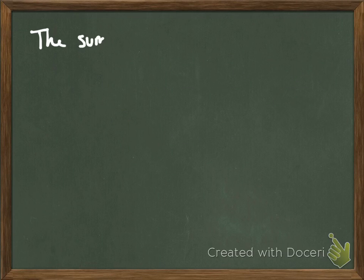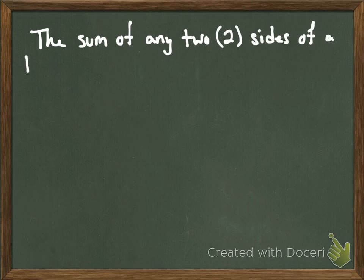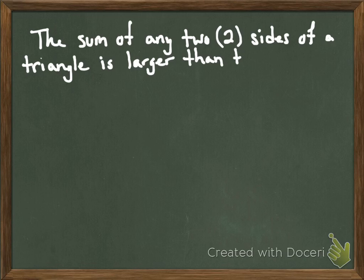Alright guys, so let's get right into it. The triangle inequality theorem basically states that the sum of any two sides of a triangle, if I take any two sides of a triangle and whatever the lengths are and I add them together, it must be larger than the third and last side. That's the gist of it. It's that simple.